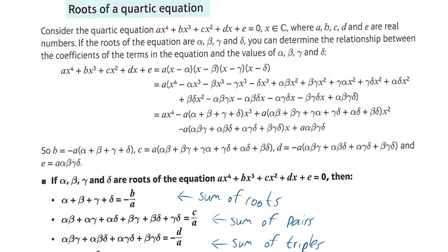We're going to look and see how roots of polynomials can be extended to roots of quartic equations. A quartic equation is just an equation which has 4 as the highest power. So ax to the power of 4, bx cubed, cx squared plus dx plus e equals 0 is a quartic equation.